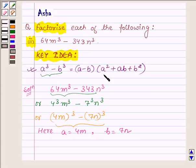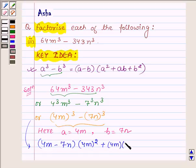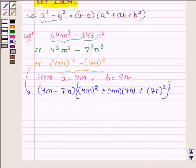So in applying this identity, this can further be written as (a - b), that is (4m - 7n), into (a² + ab + b²). That is (4m)² + (4m)(7n) + (7n)².